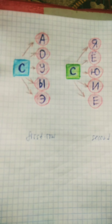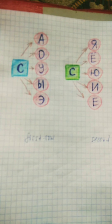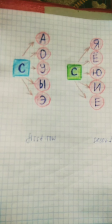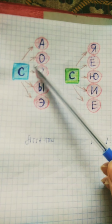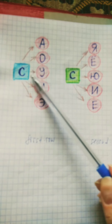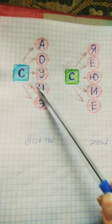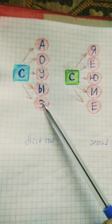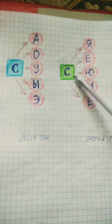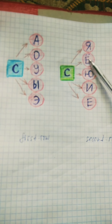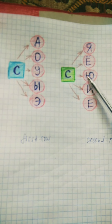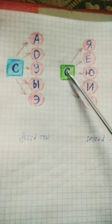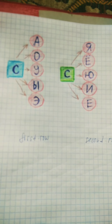You can pronounce it very slowly. Sa, so, su, si, se. Xia, xio, xiu, xii, xie.